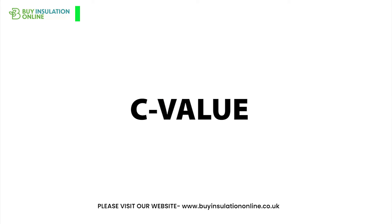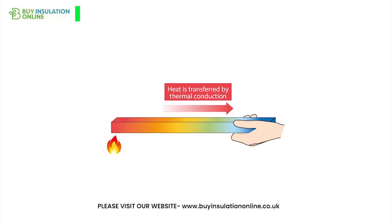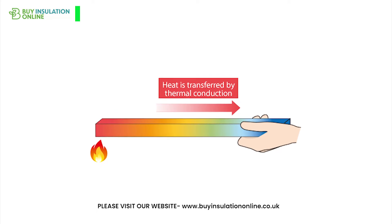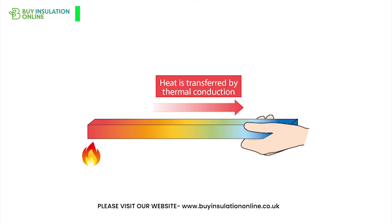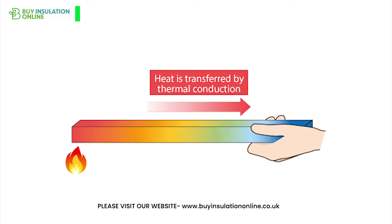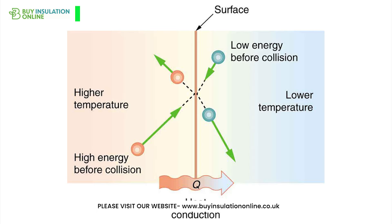C-value. C-value is a term used for insulation materials that measure the thermal conductance of the material. Thermal conductance is the rate of heat flow through a material induced by a temperature difference between the surfaces of the material.